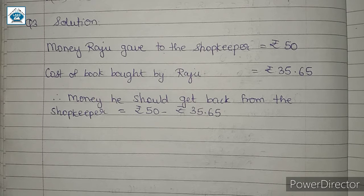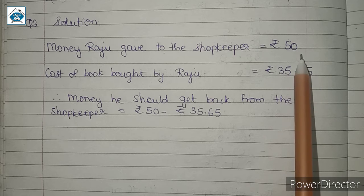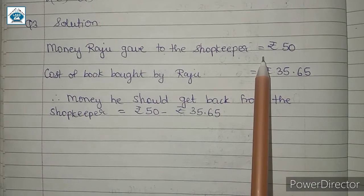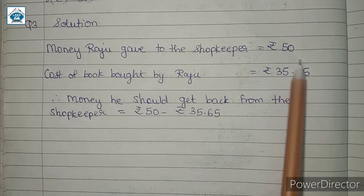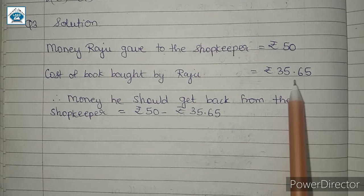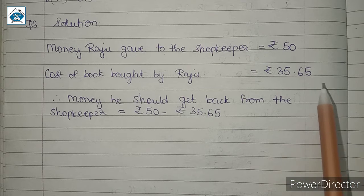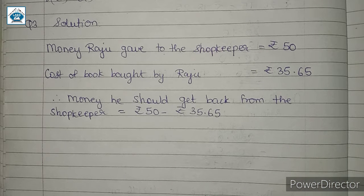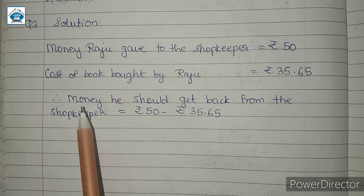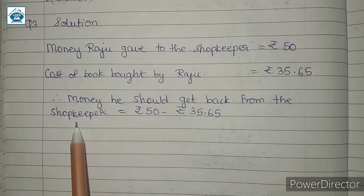In the question, it is given that money Raju gave to the shopkeeper is equal to Rs. 50. Cost of the book bought by Raju is equal to Rs. 35.65. So the money he should get back is Rs. 50 minus Rs. 35.65.